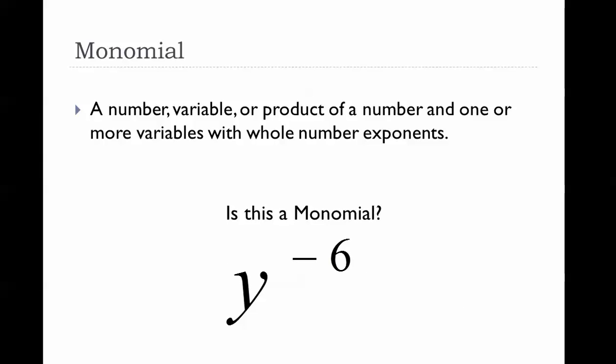Is this next one a monomial? Hopefully you said no, because negative six is not a whole number. Whole numbers are zero and then positive integers. If the exponent is a negative number, it is not a whole number exponent, and therefore it is not a monomial.